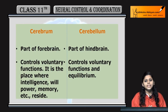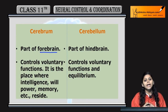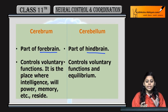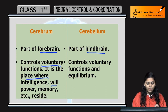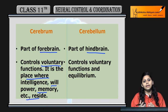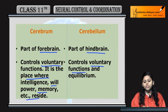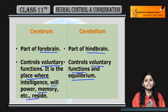Coming to cerebrum and cerebellum. Cerebrum is forebrain ka part hai and cerebellum is hindbrain ka part. Cerebrum control karta hai voluntary functions ko. It is a place where intelligence, will power, and memory reside. Cerebrum mein voluntary functions control hote hain and cerebellum mein equilibrium maintenance hoti hai.